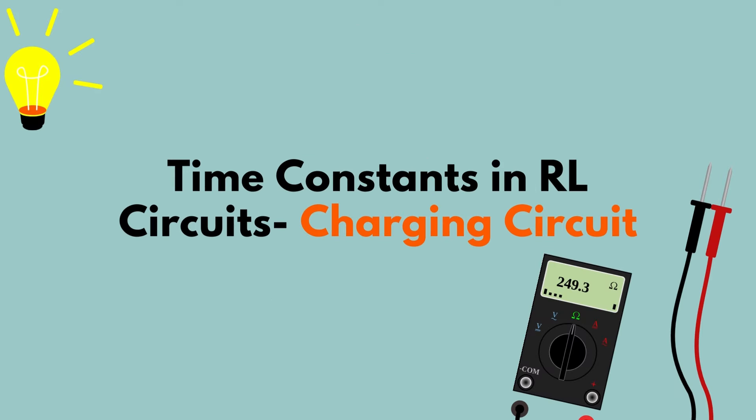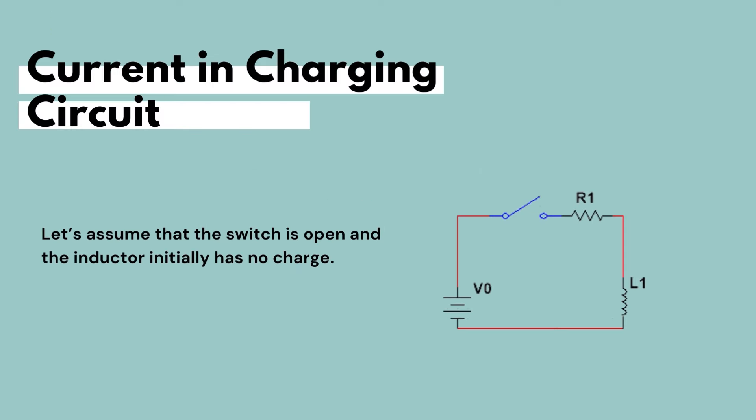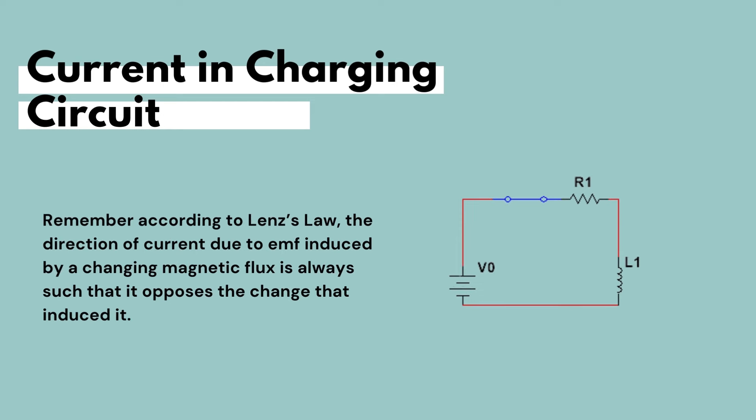In this video, we will be seeing how an abrupt change in input voltage produces a change to the output in a series RL circuit. Let's suppose that the inductor has no energy stored in it initially, and that at time equals zero, the switch is closed. As the switch closes, voltage will reach the inductor and will try to pass current abruptly through the inductor.